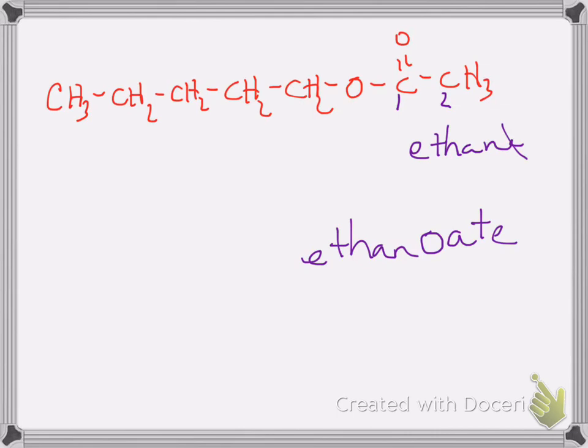Then as a substituent, essentially we name what is attached to the other side of the oxygen. The oxygen I just underlined. So we have this big group out here. It is one, two, three, four, five carbons long. So that's a pentane derivative. We're naming it as a substituent. That would be pentyl. So we have pentyl ethanoate.